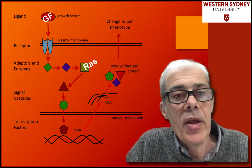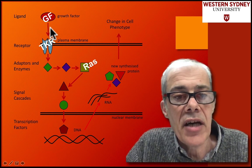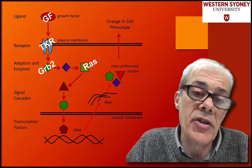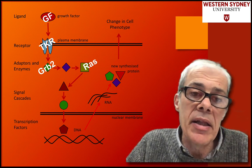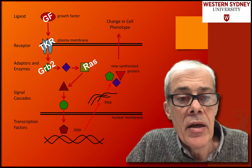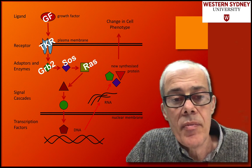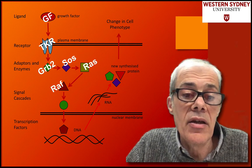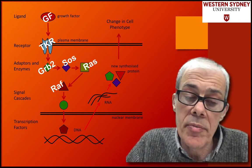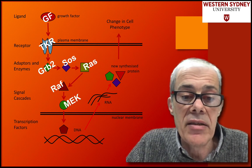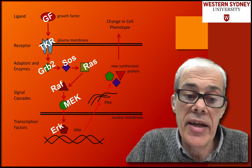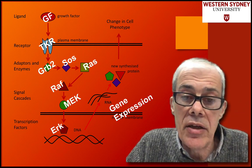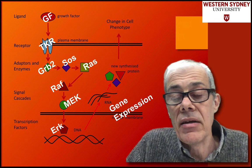So in this pathway, a growth factor leads to activation of a tyrosine kinase receptor, leading to the activation of GRB2 — an adapter that binds to the phosphorylated tyrosine. GRB2 then binds to SOS, a guanine exchange factor that activates RAS to turn it on. RAS then activates RAF by binding to it through its effector loop. RAF, a kinase, phosphorylates MEK, which is a kinase that phosphorylates ERK. ERK as a transcription factor turns on gene expression, leading to new protein synthesis and a change in cell phenotype.